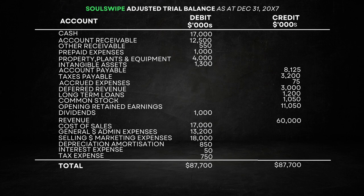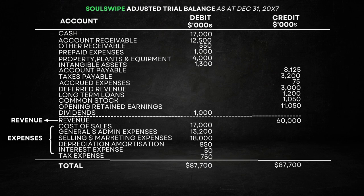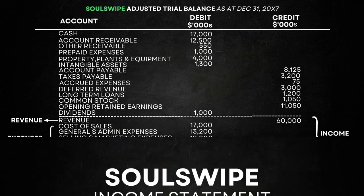This trial balance includes a complete list of SoulSwipe's accounts and their closing balances. Debit balances are listed on the left column, while credit balances are on the right. To make an income statement, we draw a line above the balance sheet accounts in the trial balance. We're primarily interested in what's below the line — SoulSwipe's revenue and expenses, which are income statement accounts.